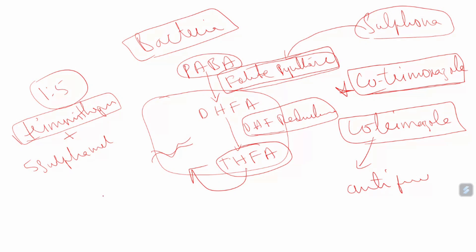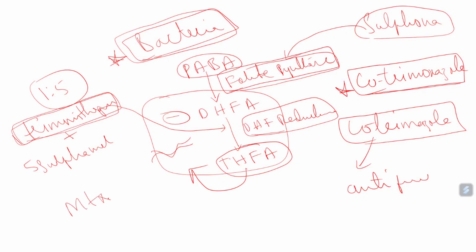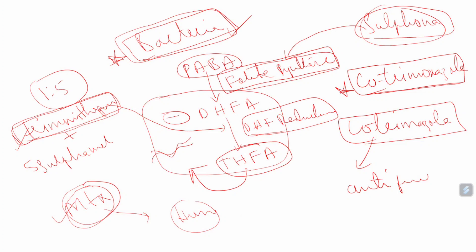Methotrexate has a similar mechanism to trimethoprim — but remember one very important thing: sulfonamides and trimethoprim inhibit these enzymes particularly in bacteria, not in human beings. That is why sulfonamides cannot be used as immunosuppressive agents or in cancer treatment. Methotrexate cannot be used as an antibacterial agent because it will not act on bacterial enzymes. Methotrexate particularly acts in human cells — in neoplastic cells, in rheumatoid arthritis, and in other conditions — and inhibits dihydrofolate reductase.